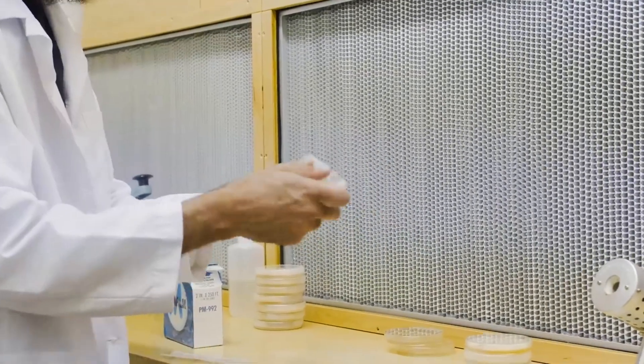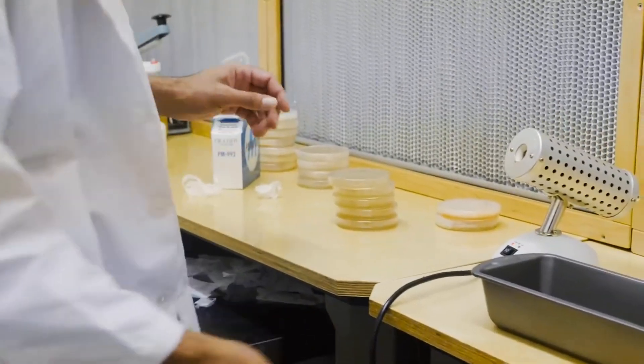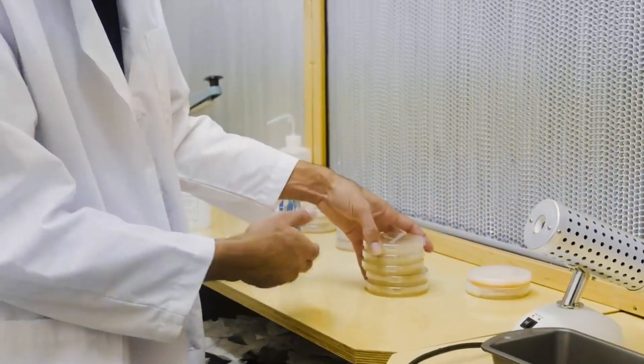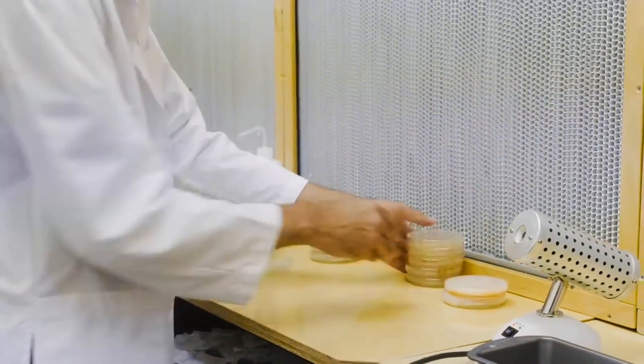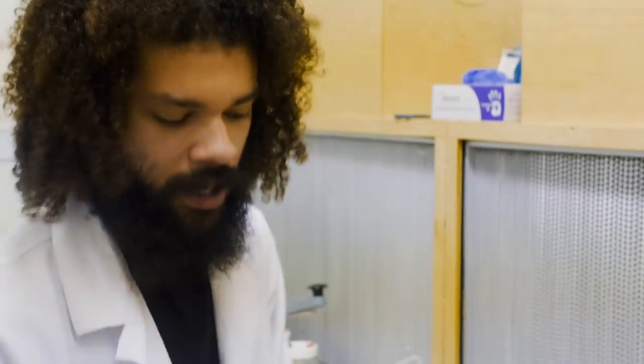If you can't get access to parafilm I've seen other people online use saran wrap. Every two to four weeks I'm in here transferring into new plates. Oftentimes you find yourself fruiting it within 10 days of inoculation to substrate.